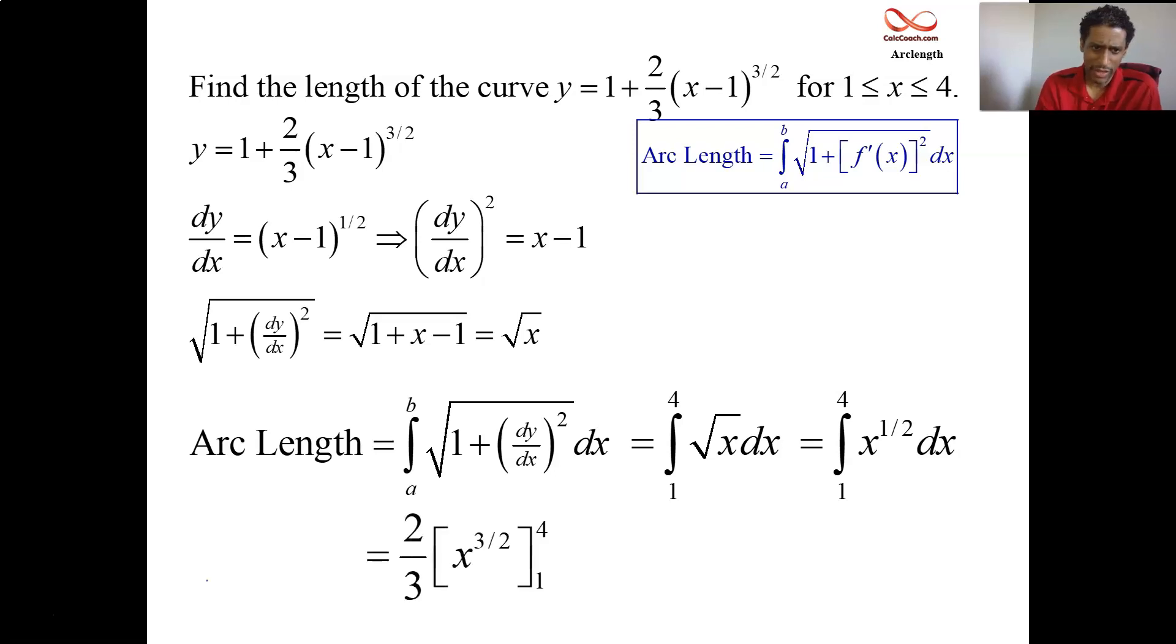That's almost too easy. I don't really want you to think that it's ever going to be that easy. But there it is. x to the one half from one to four. Real quick, it's x to the three halves with a two thirds, put a four in, put a one in. The four to the three halves is just an eight. Eight minus one is seven. Two thirds of seven, fourteen thirds. Pretty straightforward. Too easy though.